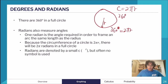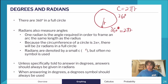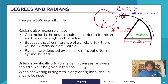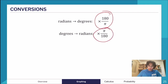Radians are generally denoted by a small 'c' superscript, but often no symbol is used. In Methods, you generally want to give answers in radians, not degrees. Set your calculator to radians — on a TI-Nspire, go to Document then Settings. When giving an answer in degrees, always include the degree symbol. To convert radians to degrees, multiply by 180/π; degrees to radians, multiply by π/180.